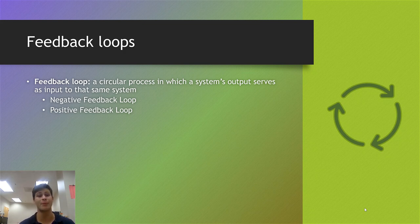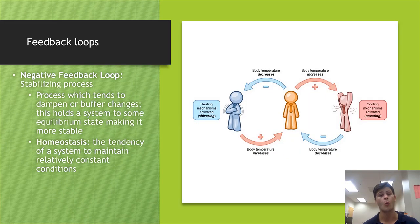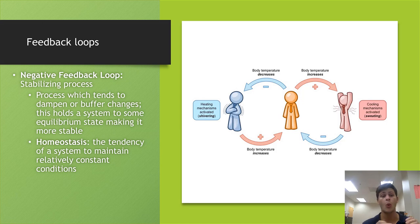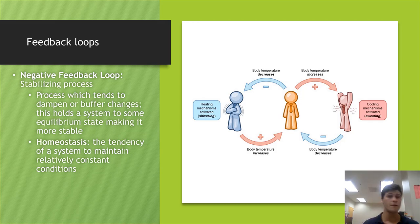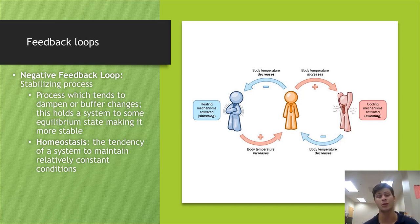Most people think negative is bad and positive is good, but in this case it's actually most often the opposite. A negative feedback loop is a stabilizing process — it tends to dampen or buffer changes to that system, holding it to some sort of equilibrium state to make it more stable. Something will try to knock a system off balance, and a negative feedback loop brings that system back to its original state. Think of a negative feedback loop as a stabilizing loop.